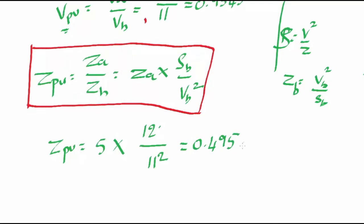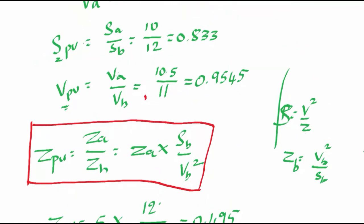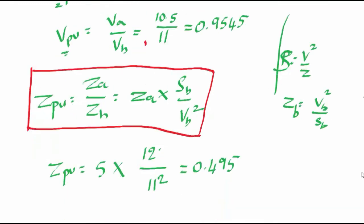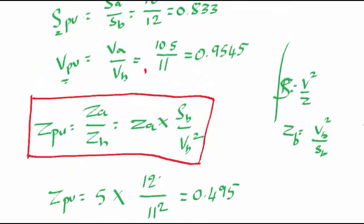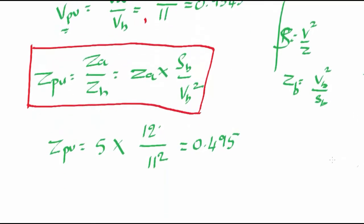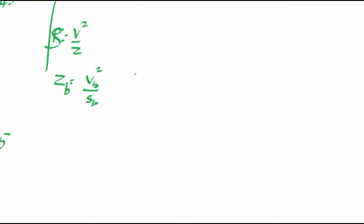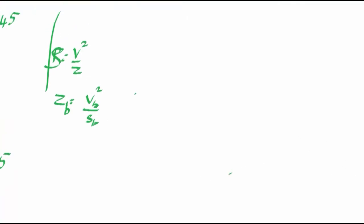Per unit values have no units, because you are taking the ratio of the same quantity — volts divided by volts cancel, so there are no units for per unit values. Actual values have their SI standard units. Now we are done finding the per unit impedance. Next we have to find the voltage drop in per unit as well as actual voltage drop.